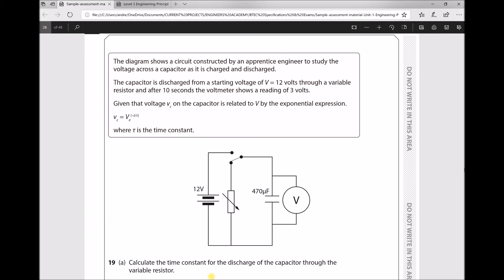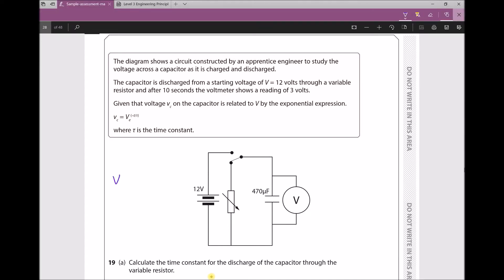The question asks us to calculate the time constant for the discharge of the capacitor through the variable resistor. It's asking us to calculate tau. Let's make a note of the equation and variables that we know. We know that VC = V*e^(-T/τ). The initial voltage or supply voltage is 12 volts, and the voltage on the capacitor after 10 seconds is 3 volts. So VC drops to 3 volts in a time of 10 seconds.